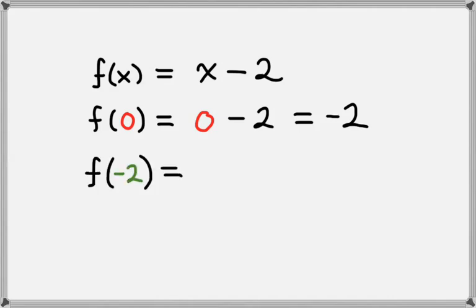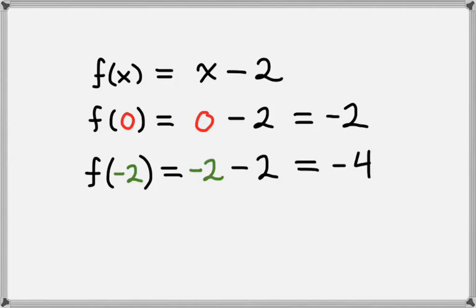Now let's look at f of negative 2. This time instead of plugging in 0 for x, we're going to plug in negative 2 for x. So we have negative 2 minus 2, and that equals negative 4. So f of negative 2 equals negative 4.